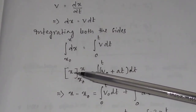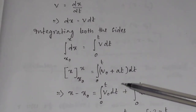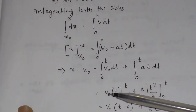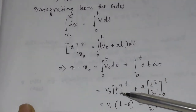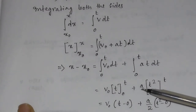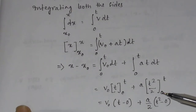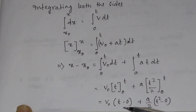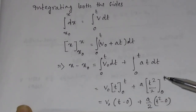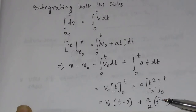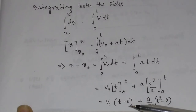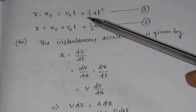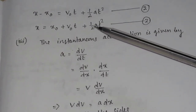Substituting the upper integral minus the lower integral on the right-hand side gives V₀ dt plus at dt. Since V₀ is constant, it comes outside, and integration of dt equals t evaluated from 0 to t. Substituting limits: V₀ into (t minus 0) plus a/2 into (t² minus 0). For the left side, x minus x₀ equals V₀t plus ½at², or x equals x₀ plus V₀t plus ½at².